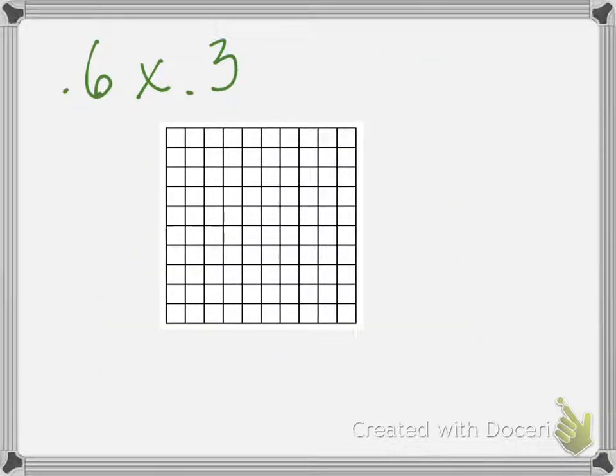When we think about multiplication, let's use a whole number by whole number to model this. If we had 3 times 7, we could say that's 3 of 7s. 3 of 7s is 21. So if we think of multiplication as the word of, we would say 6 tenths of 3 tenths, and that might make the model that we're doing today make a little more sense.